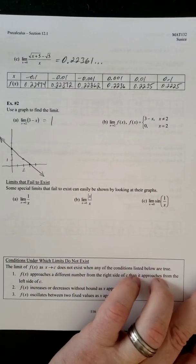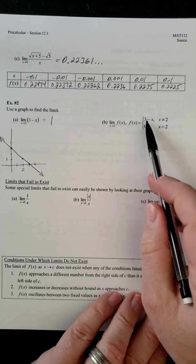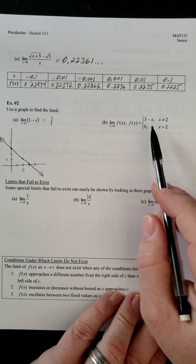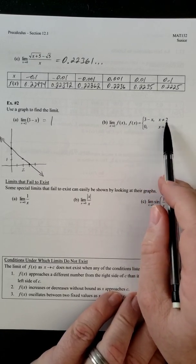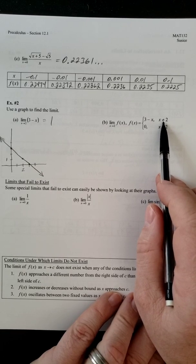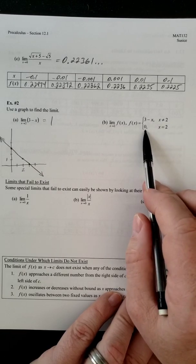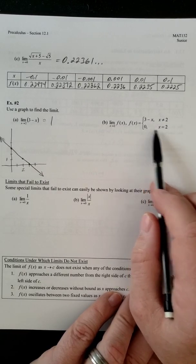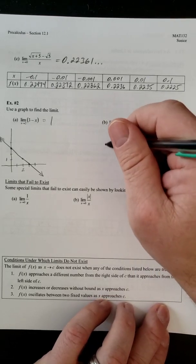Now, a more complicated one is, we still got this 3 minus x, but there's a problem. It doesn't look like that at x equals 2. It looks like it actually goes to 0 at x equals 2. So if we drew this, it's going to be very similar.